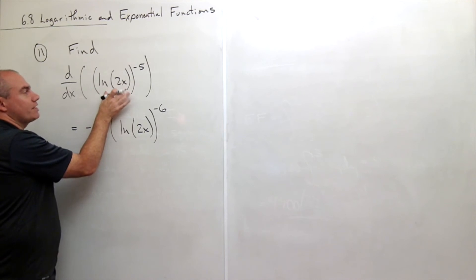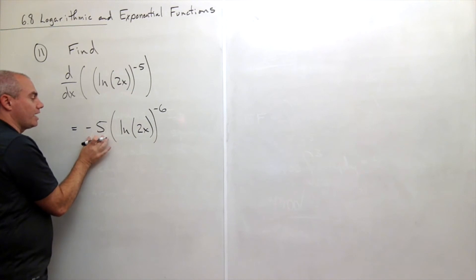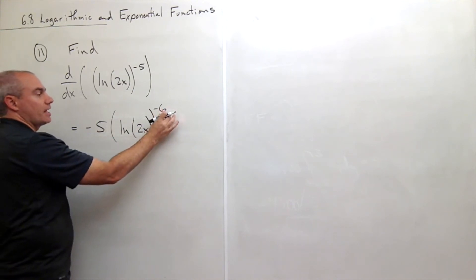Okay, so I left this thing alone and took the derivative of something to the negative 5, getting negative 5 somethings to the negative 6.